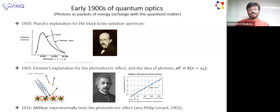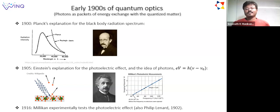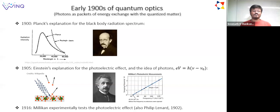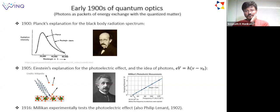There were also experimental confirmations of this. There was an earlier experiment by Philip Leonard, and also Milliken, who wanted to disprove Einstein—thinking that if he did a careful experiment he should be able to show Einstein was wrong—but Milliken ended up actually agreeing with Einstein in this regard.